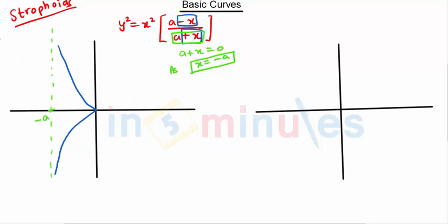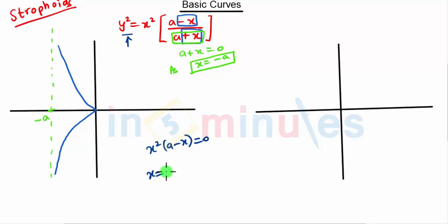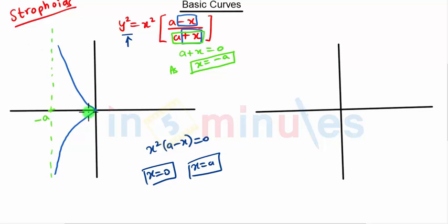After that we have to find the points on the x-axis. To find points on the x-axis we put y = 0. We get x²·(a-x) = 0, so either x = 0 or a-x = 0, giving x = a. These are the two points on the x-axis: x = 0 and x = a.